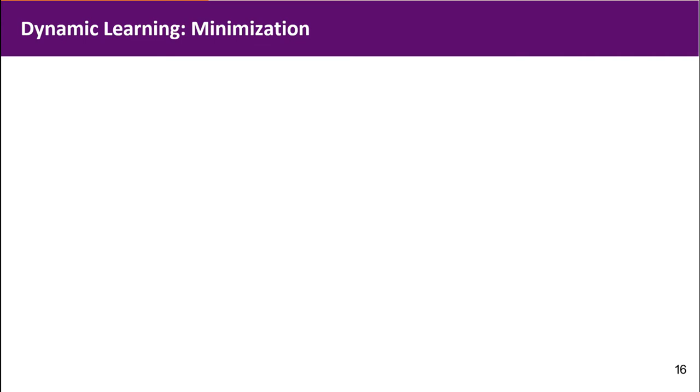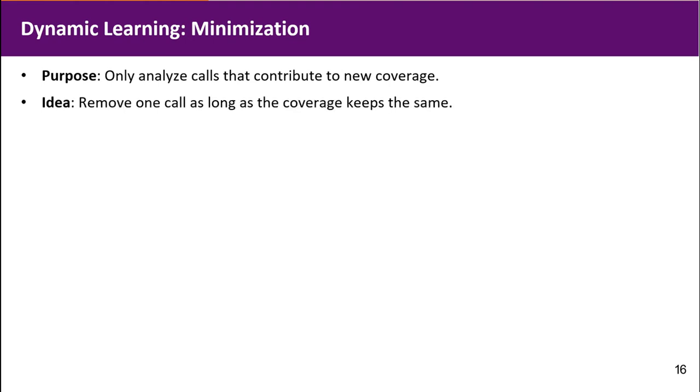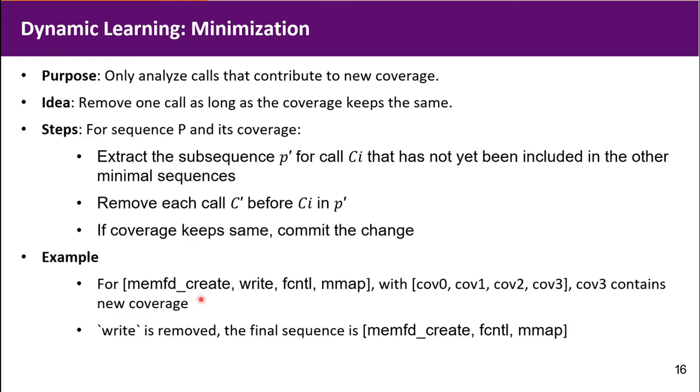Now we talk about the first part of dynamic learning, the sequence minimization. We only want to analyze calls that contribute to new coverage. We can continuously remove calls as long as the coverage keeps the same. This sequence will be minimized after minimization. The write call will be removed because it does not contribute to new coverage.